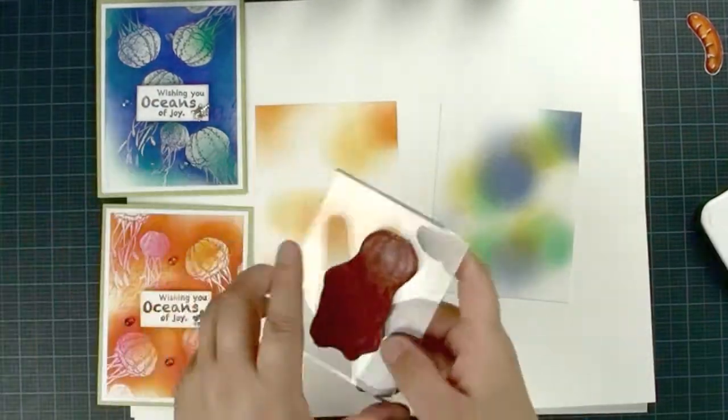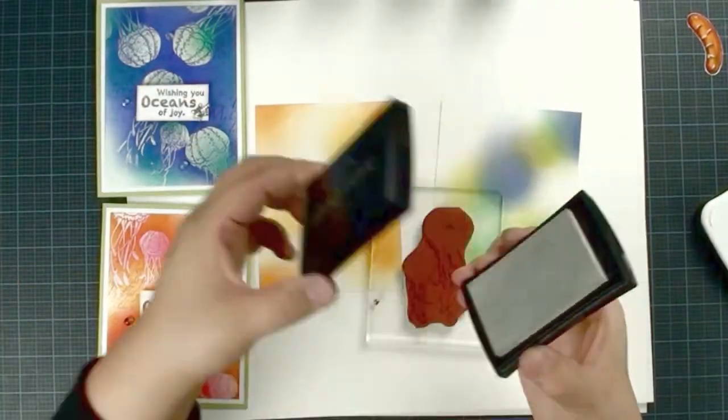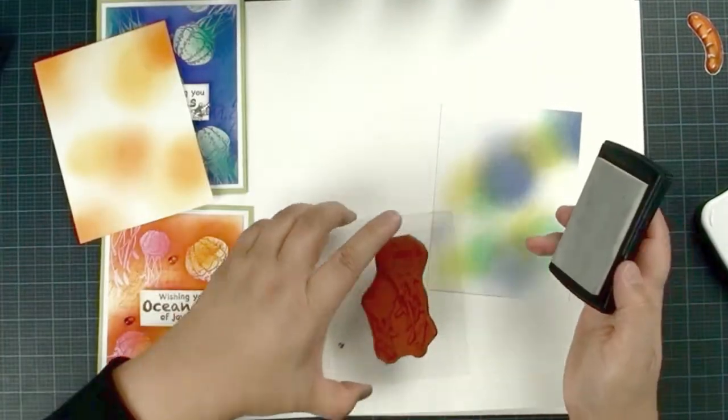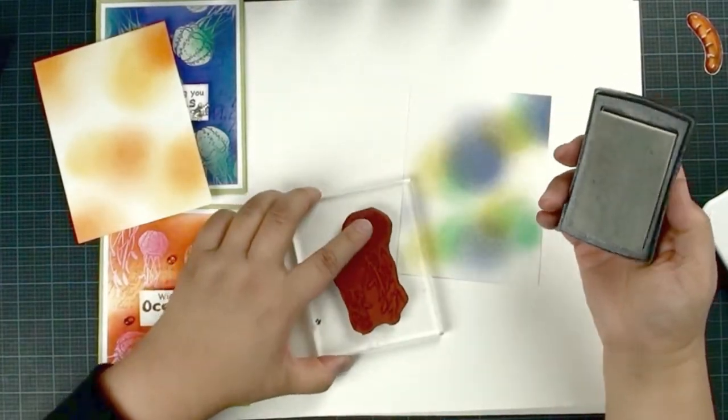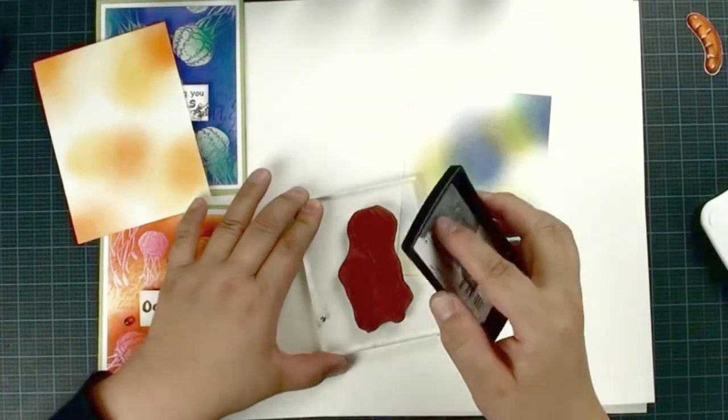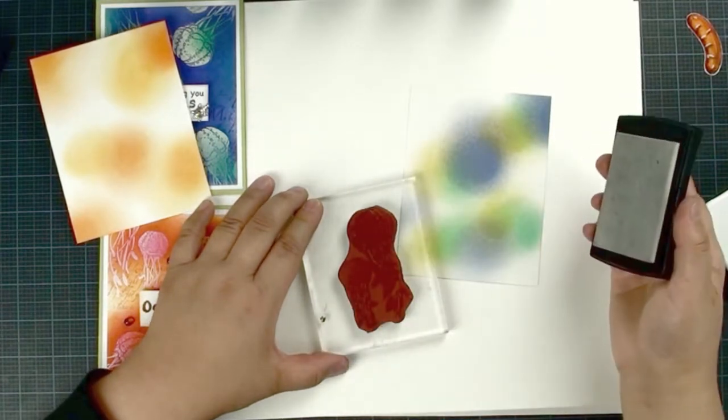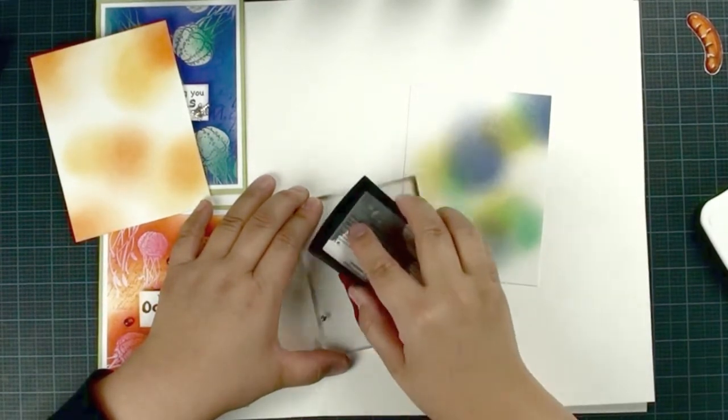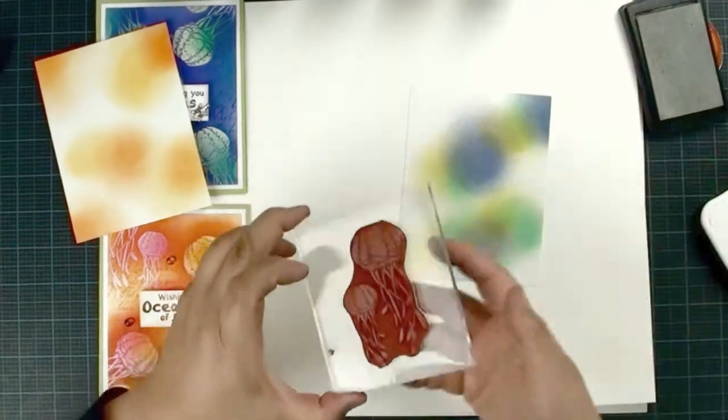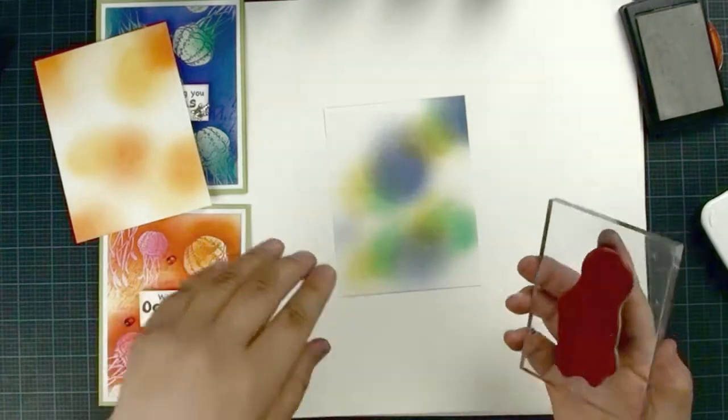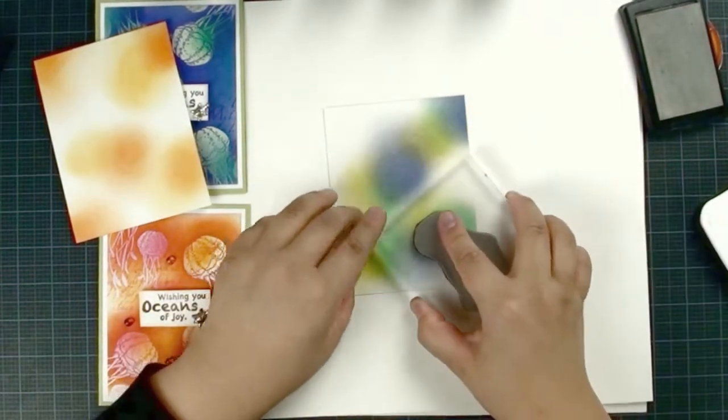We're going to stamp. Make sure your VersaMark has enough ink, because it has no color. Sometimes your ink is too dry and you don't know, and you don't get a nice image. This is how I ink my stamp. I usually rub when I use dye-based inks. But when you use VersaMark, it's kind of sticky. You have to tap to make sure you have nice coverage.